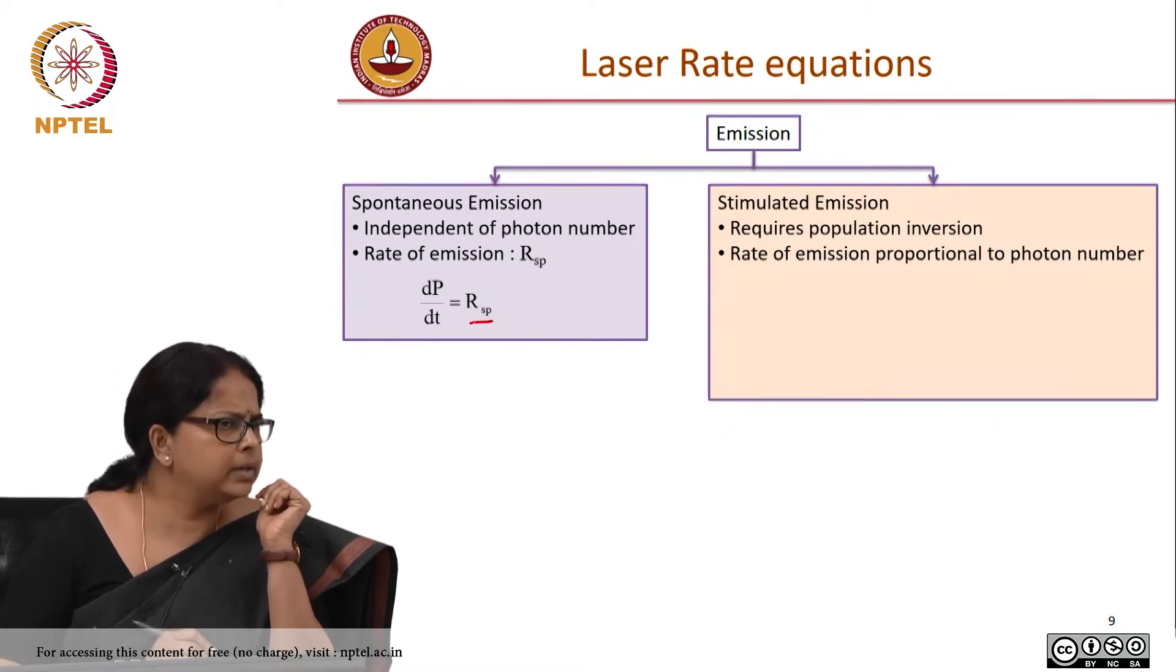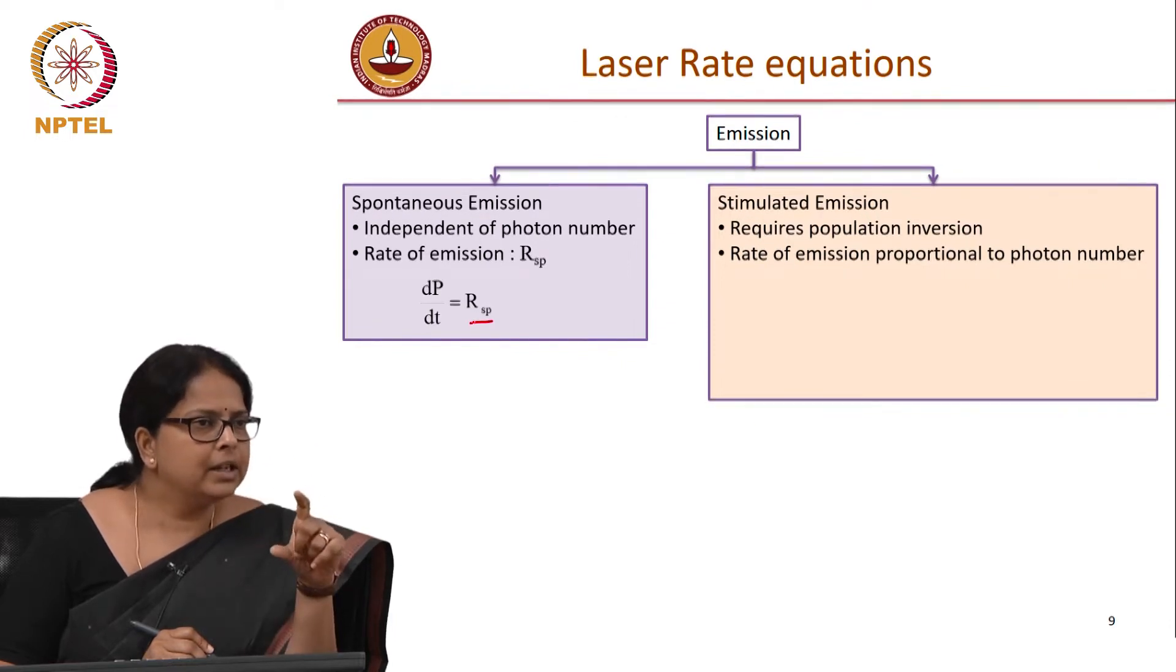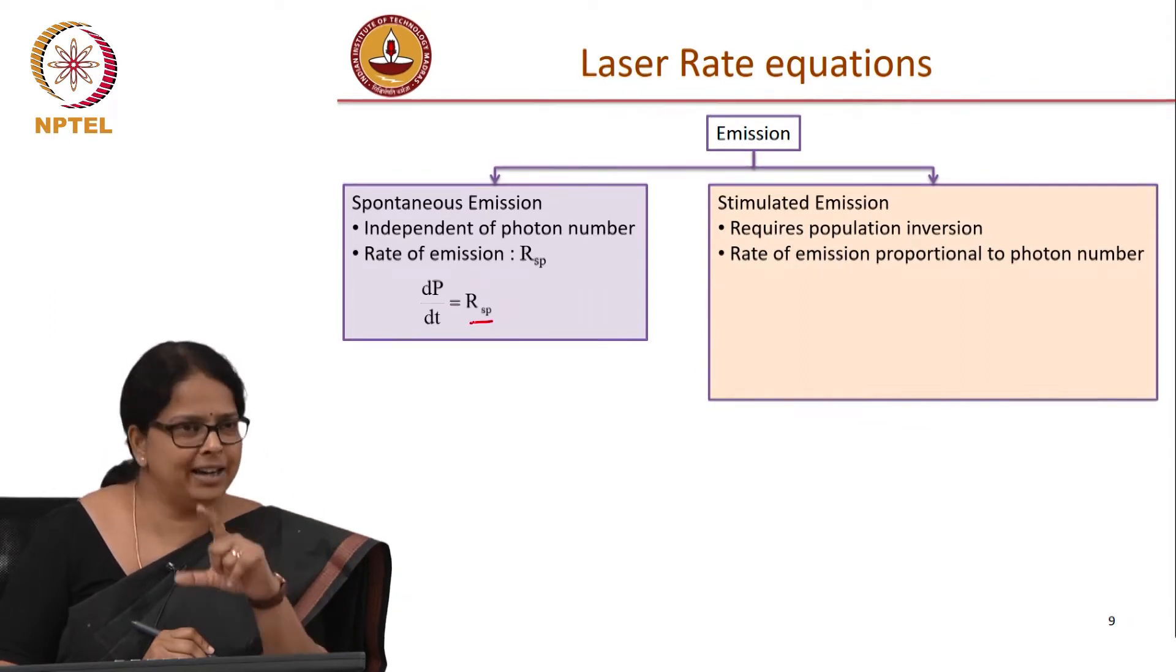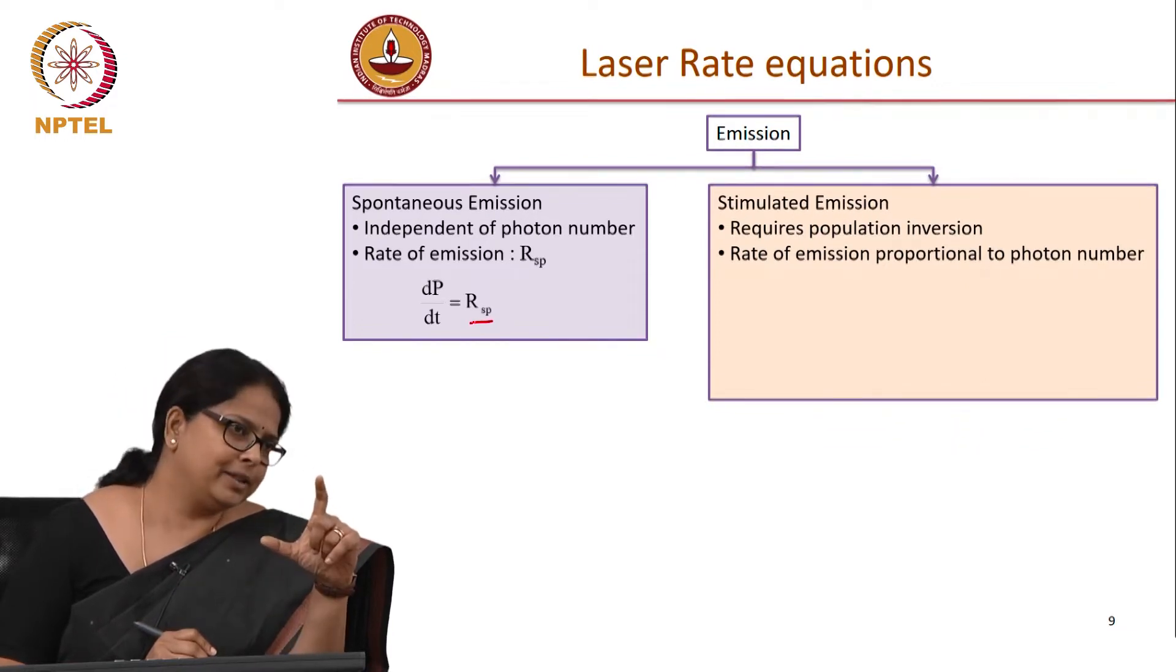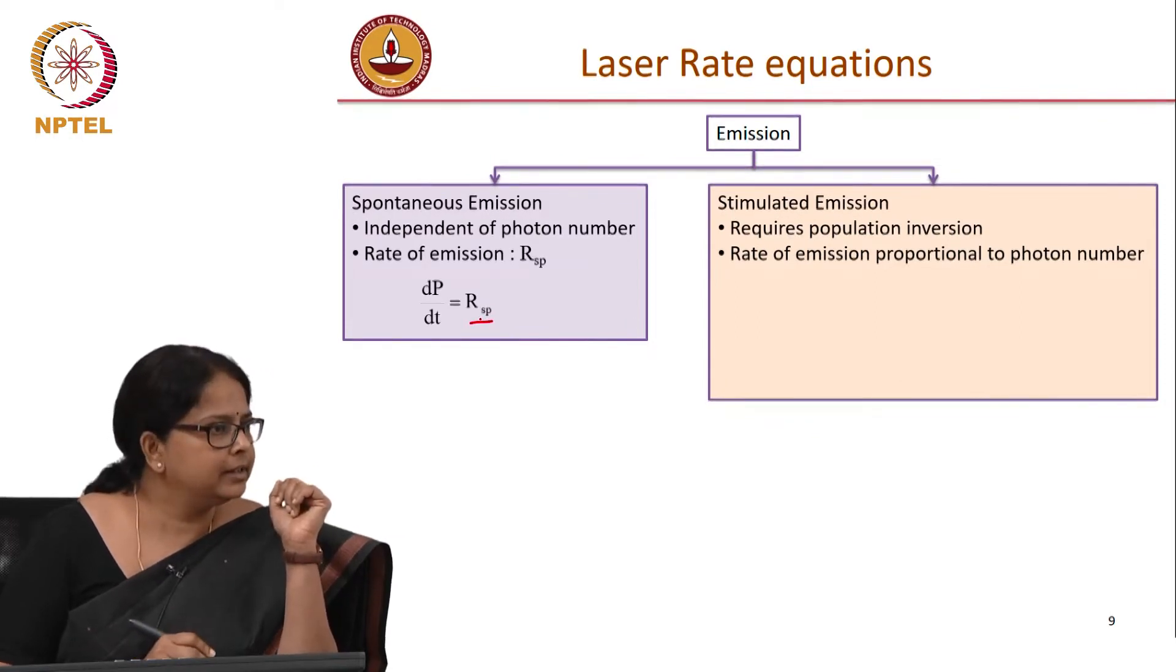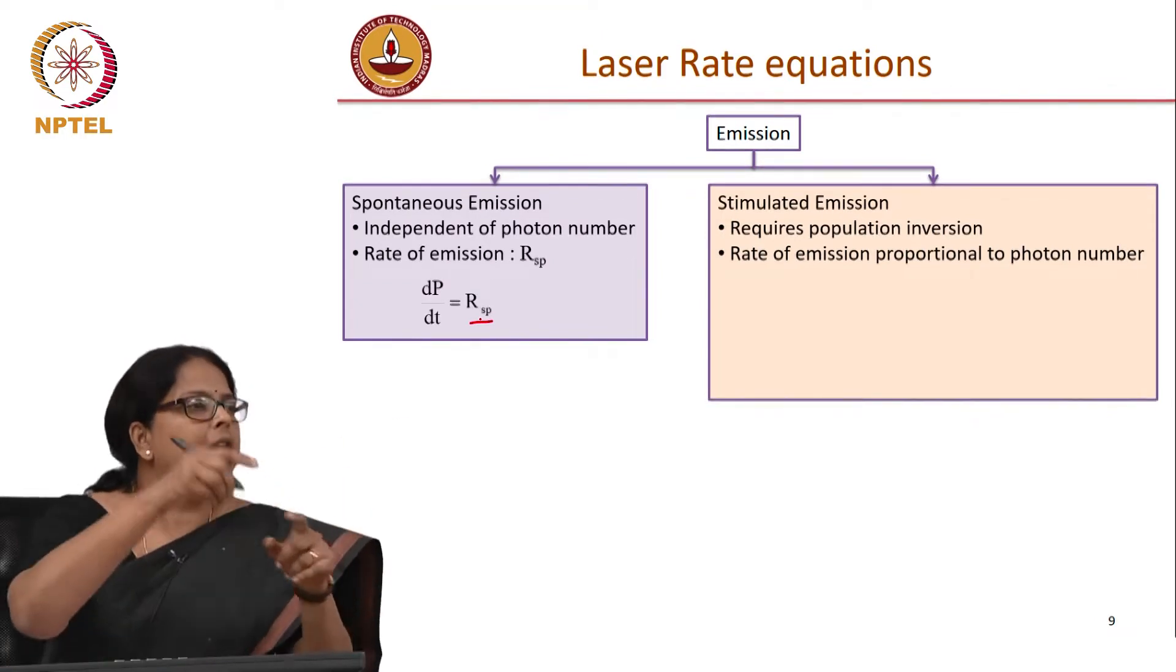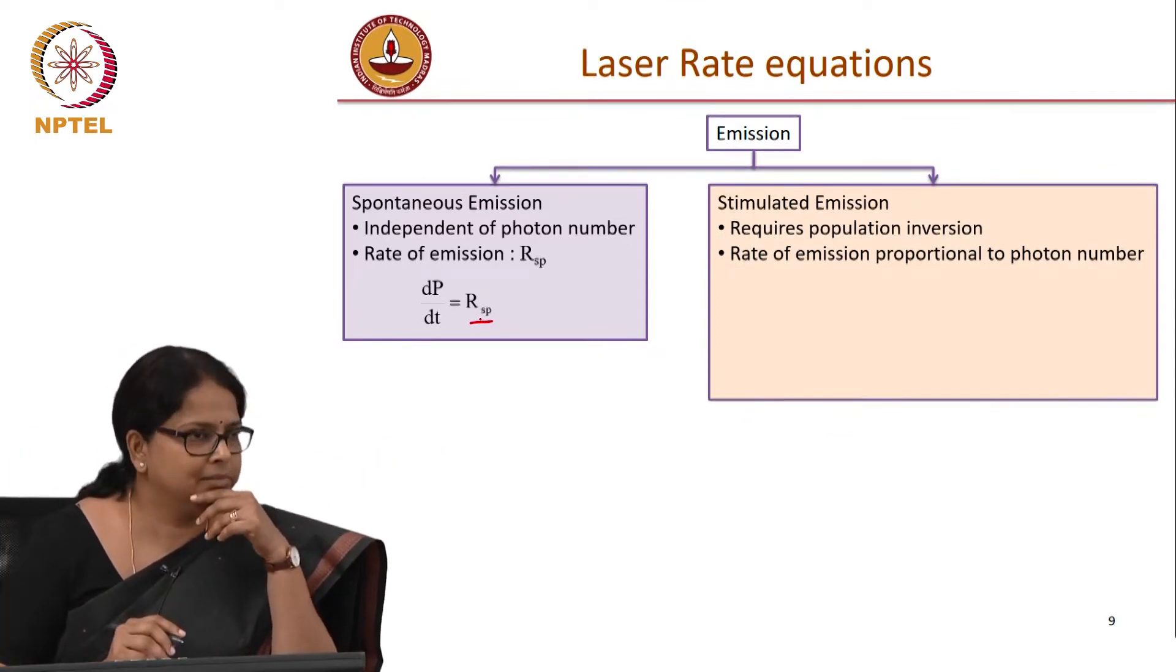Why is this not equal to n by tau c? What was n by tau c? Rate of recombination, that includes both radiative and non-radiative recombination. We are interested only in the radiative part of it, right? So that is why we are representing it with a different rate. That tau c will have tau r and tau nr. So this RSP has to be related to your tau r, radiative recombination type.